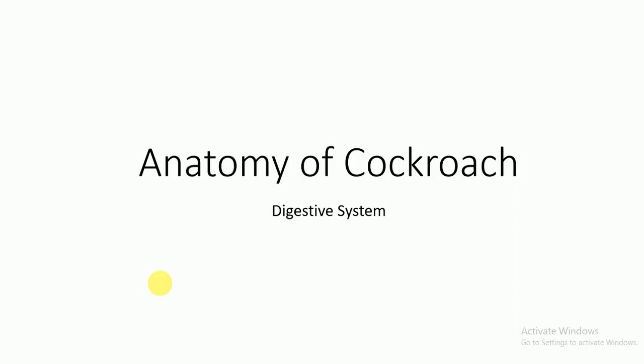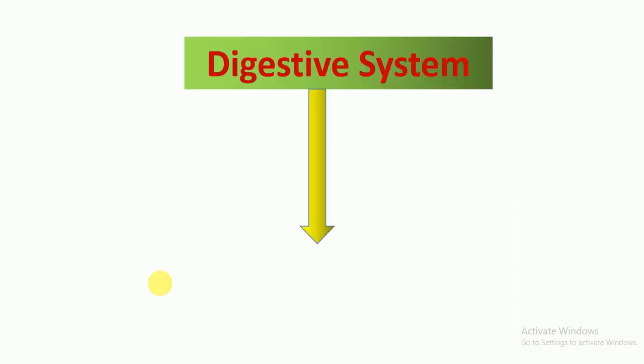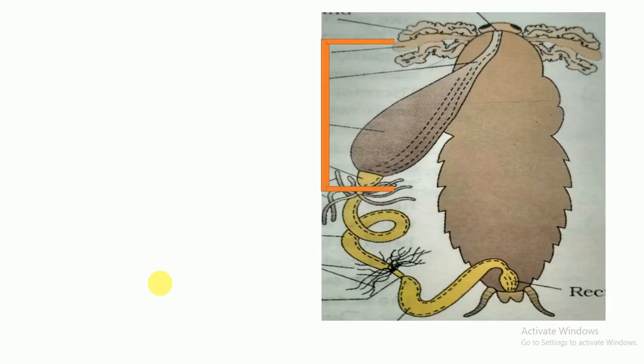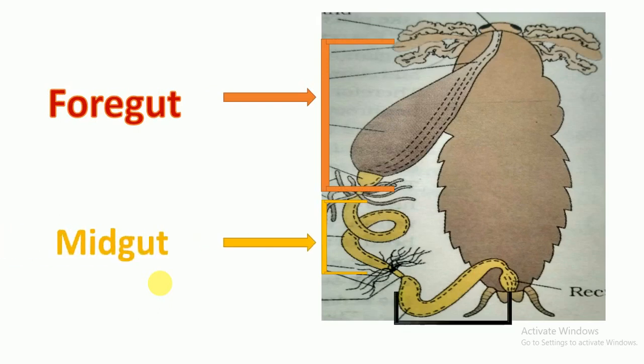The digestive system includes the alimentary canal and digestive glands. The alimentary canal consists of foregut, midgut, and hindgut.